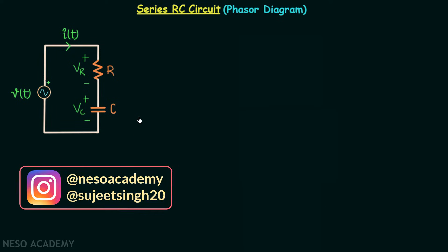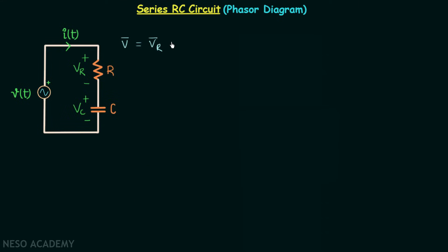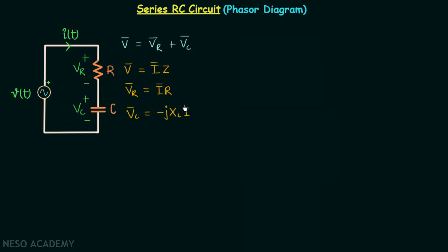When two different types of elements are connected in series, the total voltage will be the phasor sum. This means V phasor equals VR phasor plus VC phasor. V phasor equals I phasor multiplied by impedance Z, VR phasor equals I phasor multiplied by resistance R, and VC phasor equals negative j·XC times I phasor.